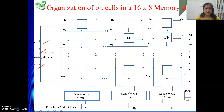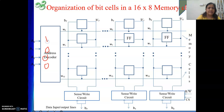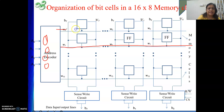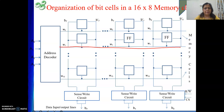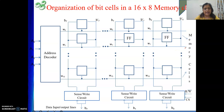The decoder can produce 16 outputs, but depending on the value of the input, only one output line will be active. Suppose the input address is 0001, then this particular line will be active. If it is all 0s, then this line will be active. The active line is called a word line. Depending on whatever address we provide to the decoder, one of the word lines will be enabled.